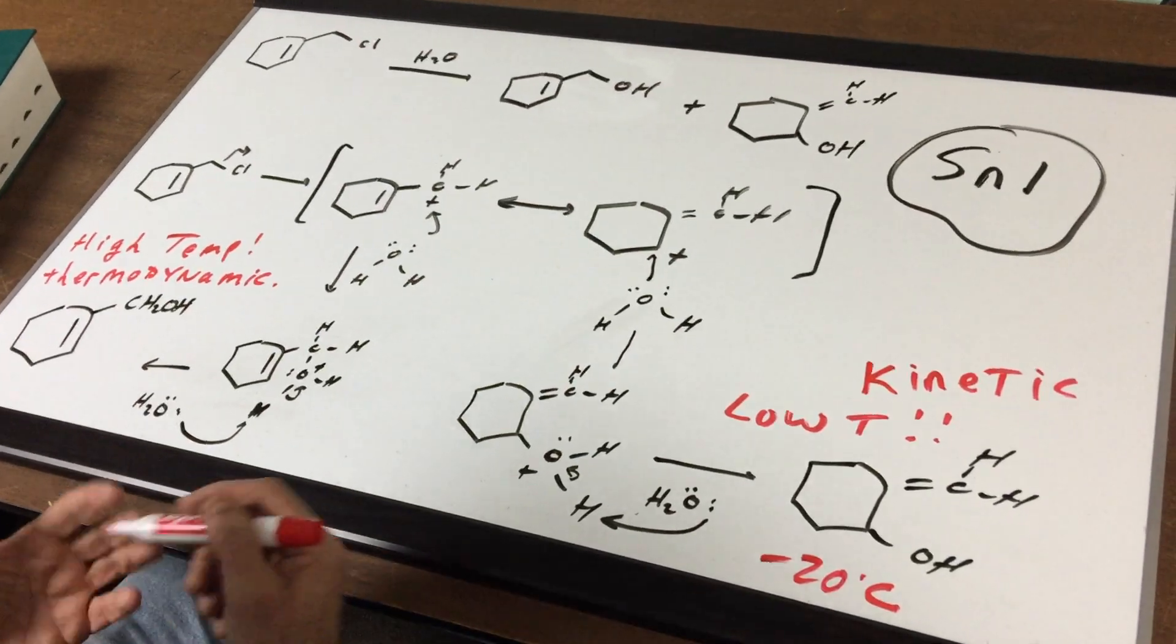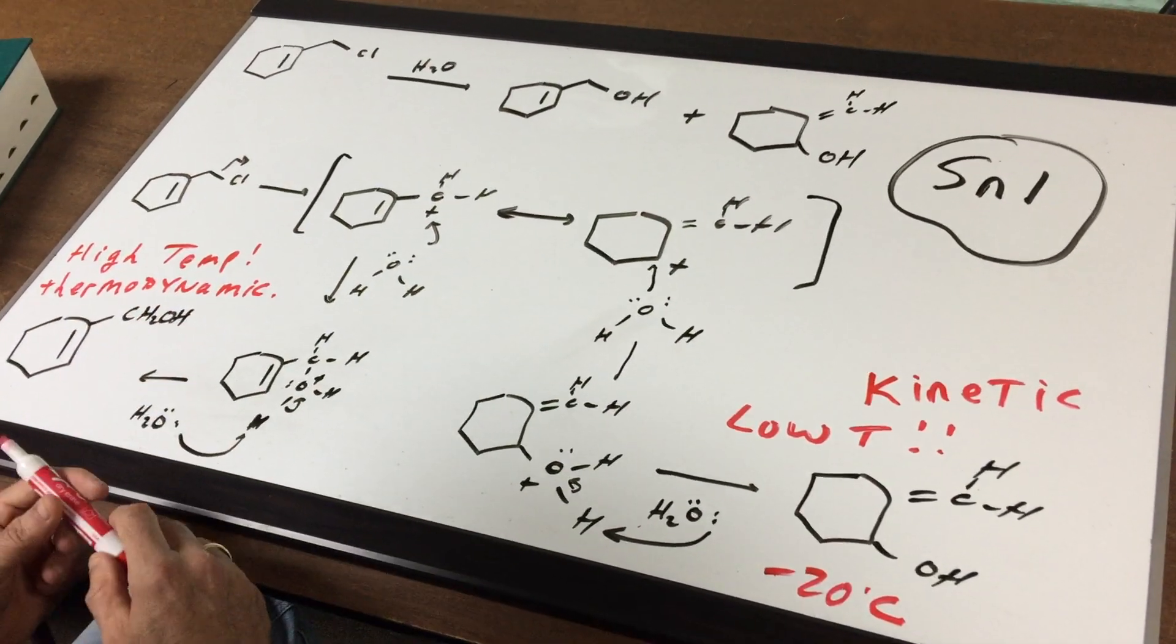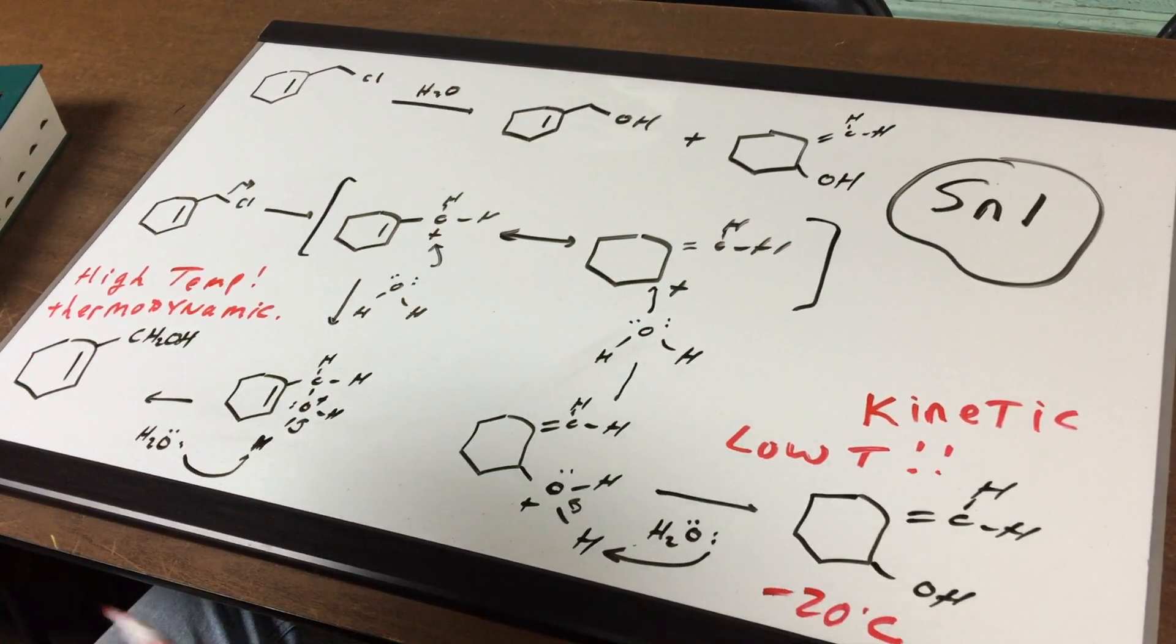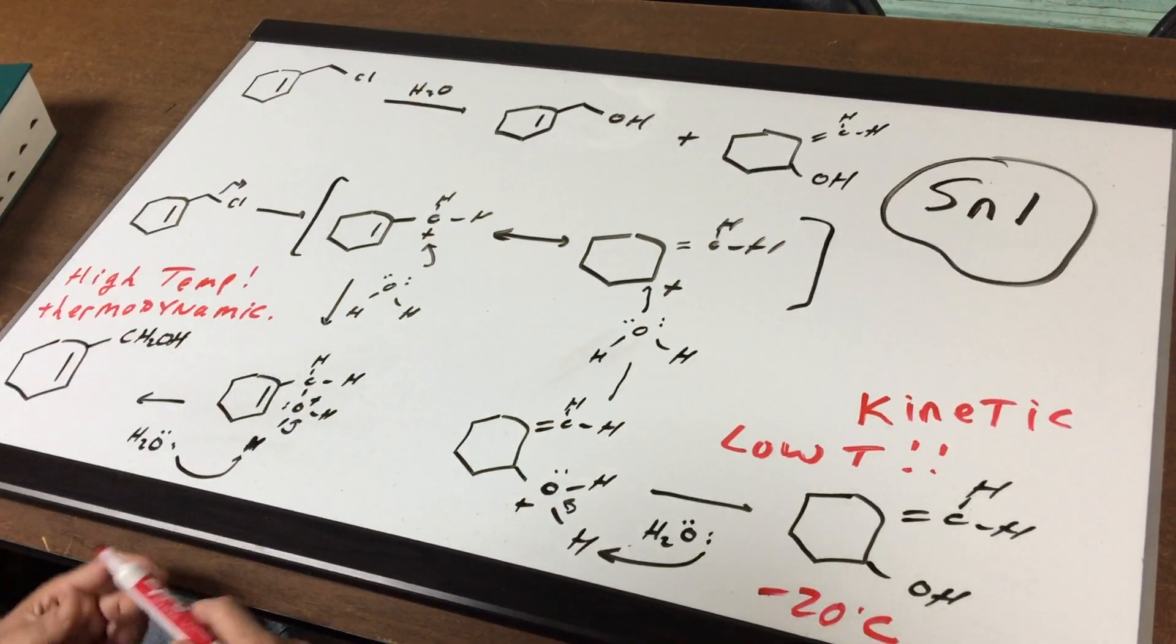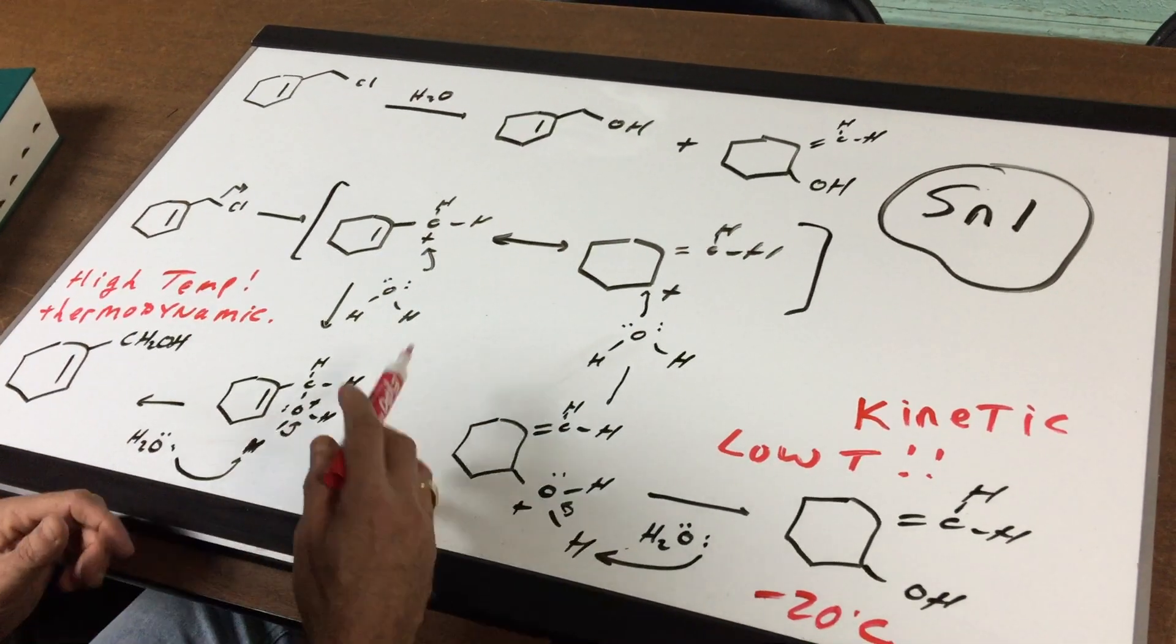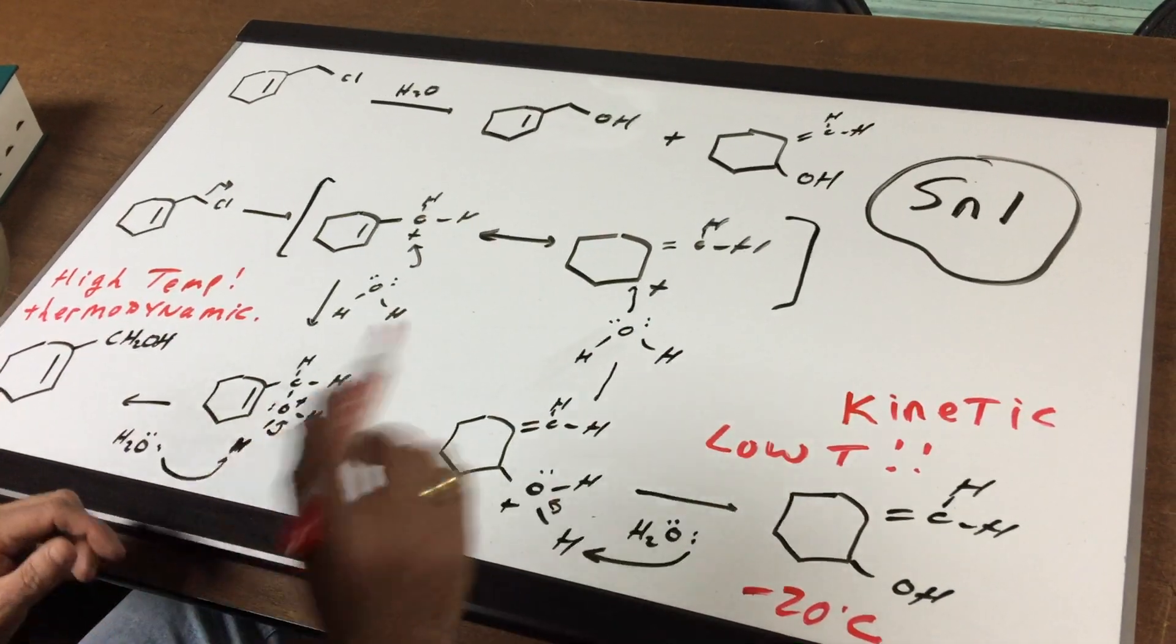And that means that the product would be more stable. So that is what we call the thermodynamic product and that will occur at higher temperature. I hope this gives you a good idea that many times the temperature plays a very important role in determining the thermodynamic product and the kinetic product.